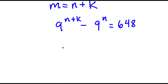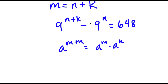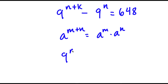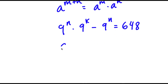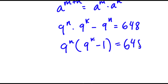If I have something in the form a to the power of m plus n, this is equal to a to the power of m times a to the power of n. So 9 to the power of n plus k equals 9 to the power of n times 9 to the power of k. Now I have this minus 9 to the power of n is equal to 648. Factoring out 9 to the power of n, I get 9 to the power of n times the quantity 9 to the power of k minus 1 is equal to 648.